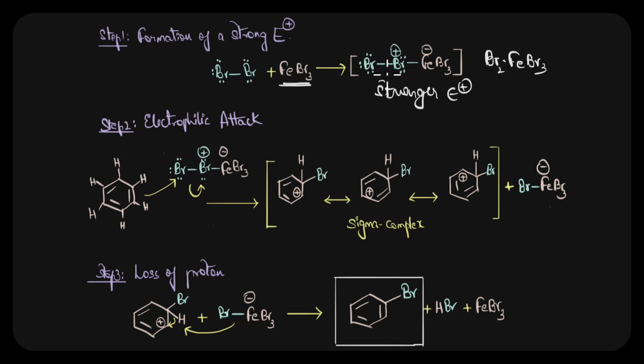We know that bromine is an electronegative atom and it does not do well when it has a positive charge attached to it. It has to lose its positive charge and acquire electrons, which makes it behave like a very strong electrophile.